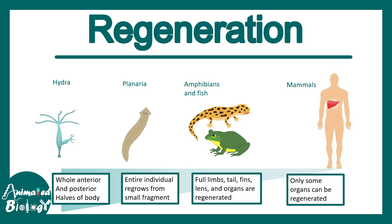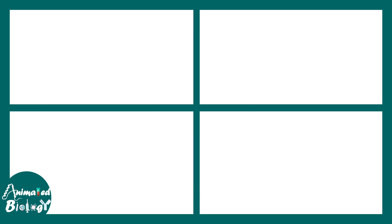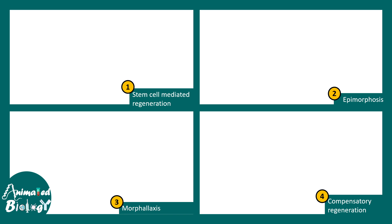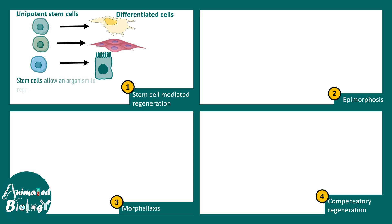Regeneration can be subdivided into four basic types. One is stem cell mediated regeneration, which we are going to review in detail. Second is epimorphosis. Third is morpholexis. Fourth is compensatory regeneration. In stem cell mediated regeneration, there are unipotent stem cells that, upon injury, can regenerate and give rise to differentiated cell types — and that's what happens in planaria.